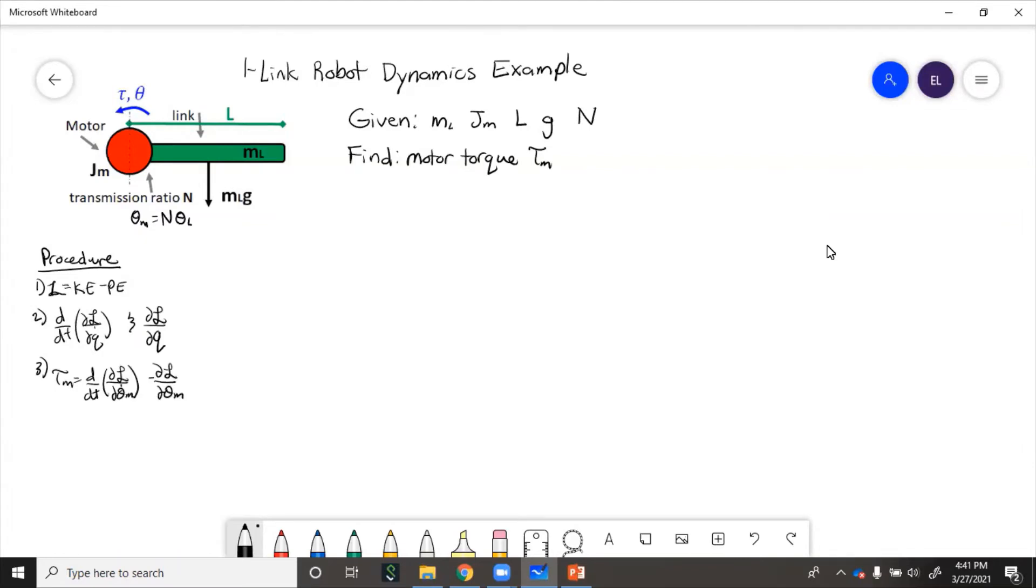Now in this case, theta_m is the joint variable, so we'll be doing things in terms of theta_m instead of q. We will need to convert theta_l to theta_m using that transmission ratio if we happen to get it in the equations.